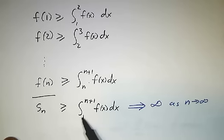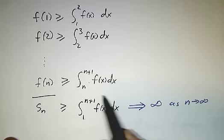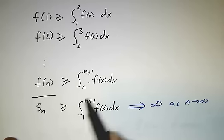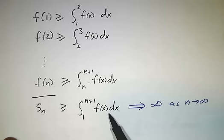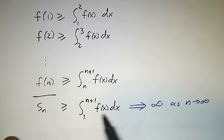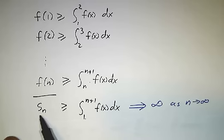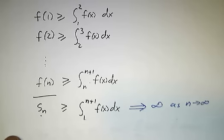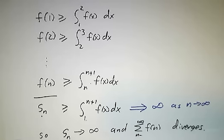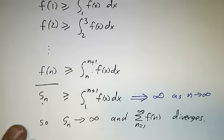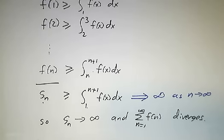As n goes to infinity, this integral gets bigger and bigger because we said the integral diverges. Since the integral grows without bound, S_n has to as well. So S_n goes to infinity, which means our sum diverges.